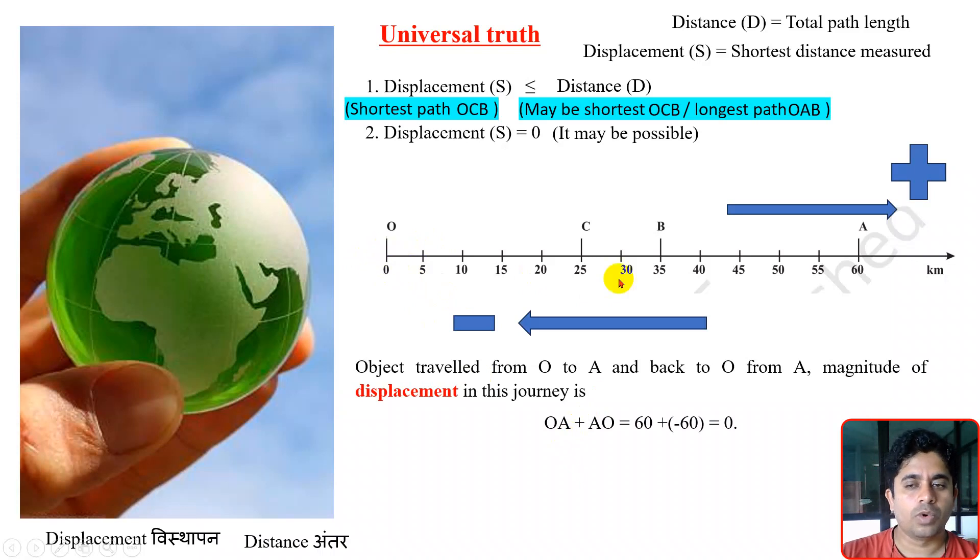Now the object is traveling from O to A. O to A means it is moving towards the right hand side, so we take that distance with a positive sign. Here we have written positive 60 for OA. And now once it travels from A to O, with respect to A,